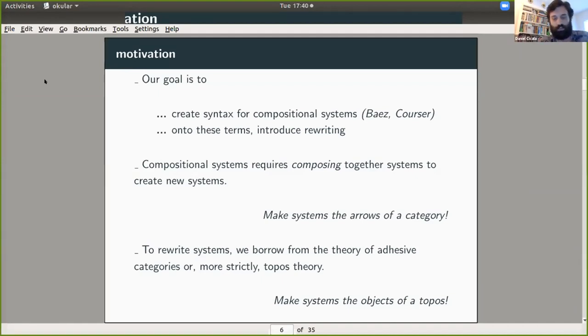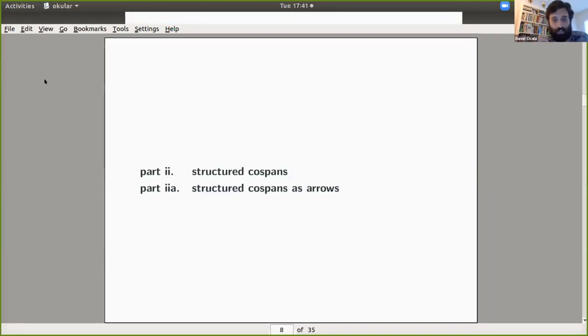But a subclass of adhesive categories are topoi. So every topos is adhesive. And so really, I'll be restricting my attention to topoi. And for this reason, I also want to make systems the objects of some topos. So I have this sort of superposition of systems being two different things at the same time. I want them to both be arrows and objects. And so this leads me to think, oh hey, let's use double categories. Seems to be a natural thing to think about.